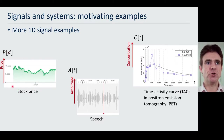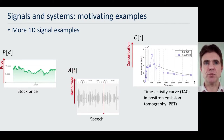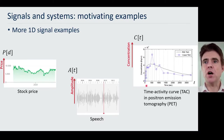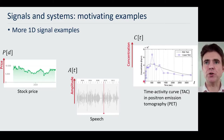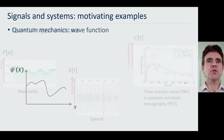A few more examples of how ubiquitous functions and signals really are: in finance, we could look at stock price P as a function of day — a discrete 1D function. This recording is an audio signal — amplitude varying with time — also a signal or a function. In positron emission tomography, we could look at uptake of a radiotracer compound in tissues in the human body: concentration C depending on the time variable T.